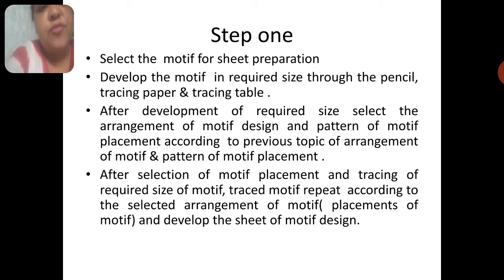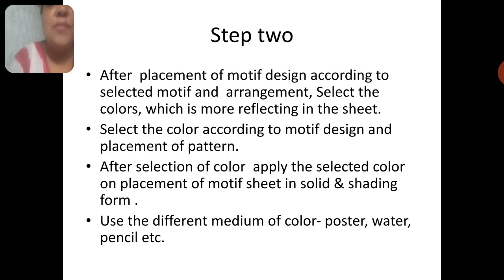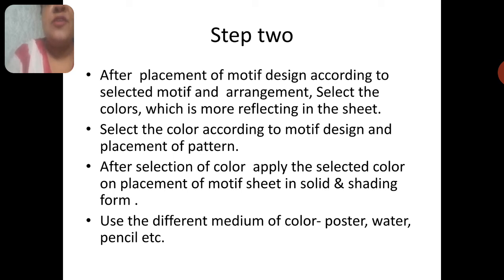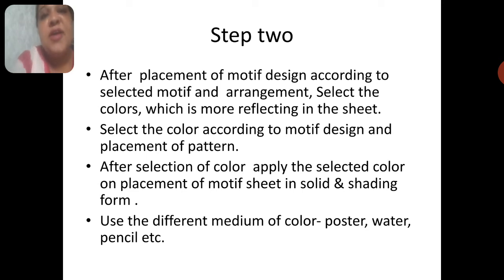After selection of motif placement and tracing of required size, trace the motif repeat according to the selected arrangement and develop the sheet of motif design. Now the sheet is developed. Again, similar to the previous session, you select the color, which is very important. After placement of motif design, according to selected motif and arrangement, select the color which is most effective in the sheet. You may use the same colors already used in traditional motifs.